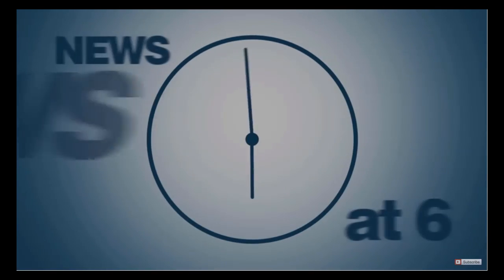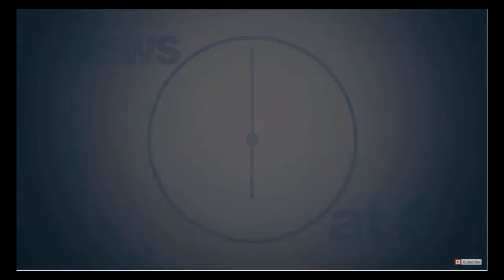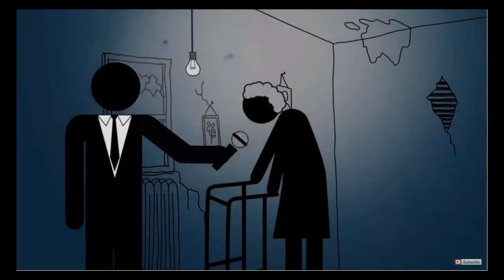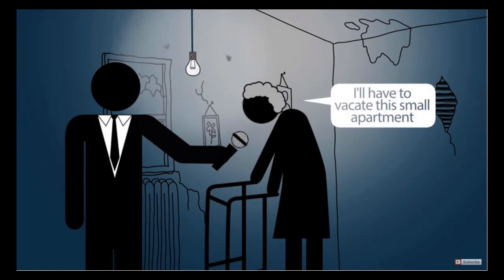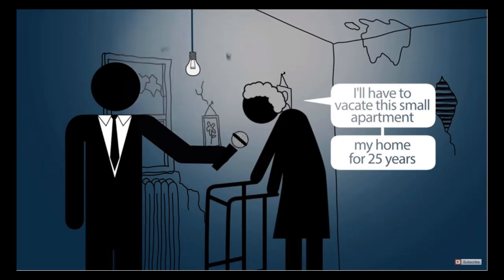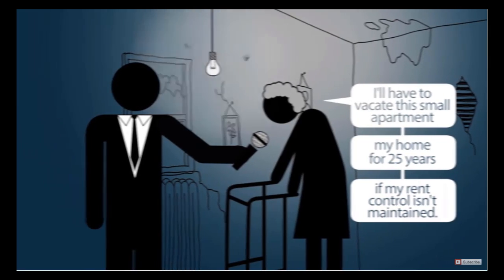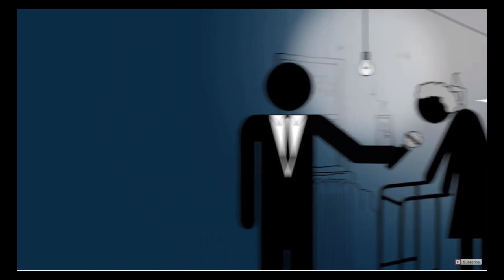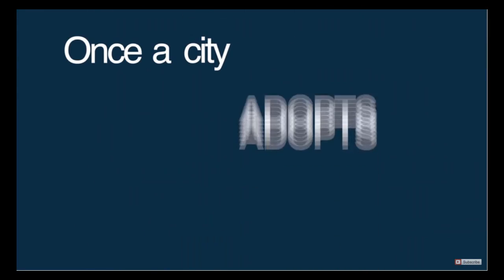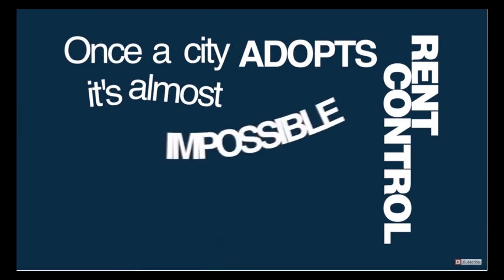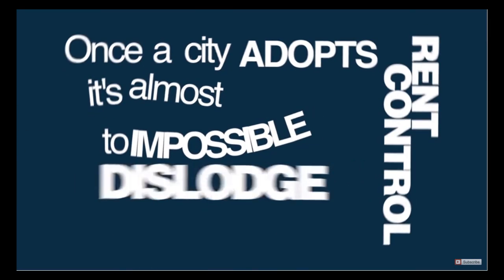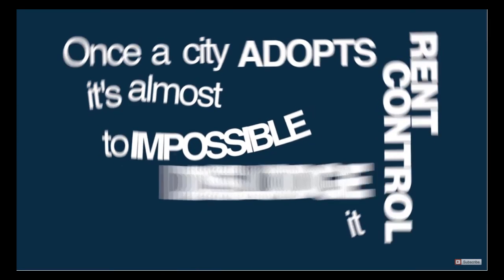Imagine this 6 o'clock news story: a reporter interviews a senior citizen describing how she'll have to vacate her small apartment — her home for 25 years — if her rent control isn't maintained. What politician wants to go up against that? These are just a few of the reasons why, once a city adopts rent control, it's almost impossible to dislodge it. But does rent control work?